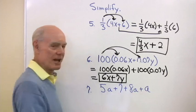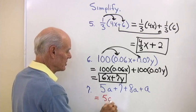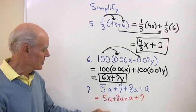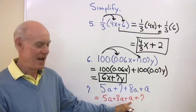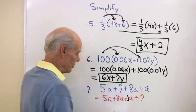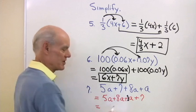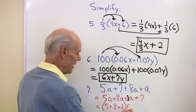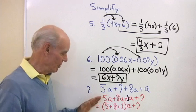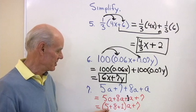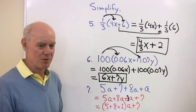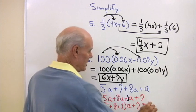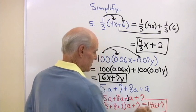How about 5a plus 7 plus 8a plus a? By the commutative property, rearrange so all variable terms are together: 5a plus 8a plus 1a plus 7. Then using the distributive property in reverse, factor out a: that gives 5 plus 8 plus 1 times a, plus 7. 5 plus 8 plus 1 is 14, so the result is 14a plus 7.